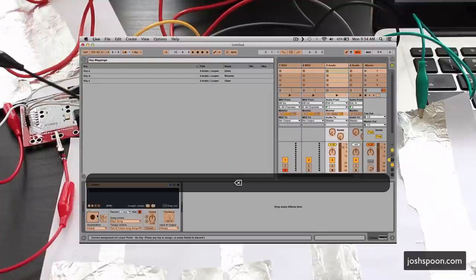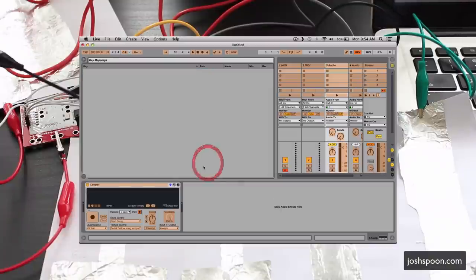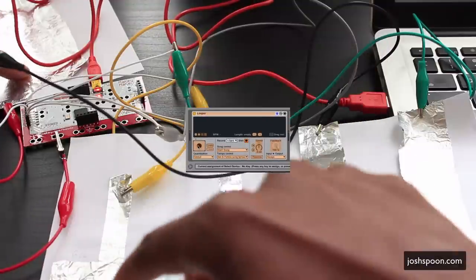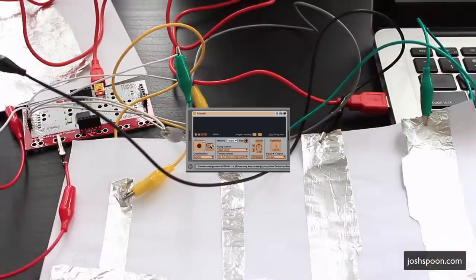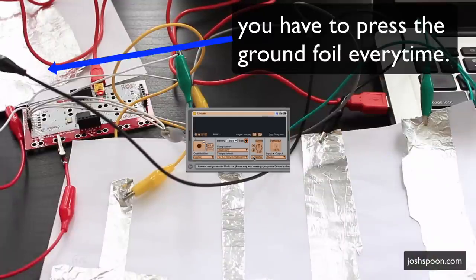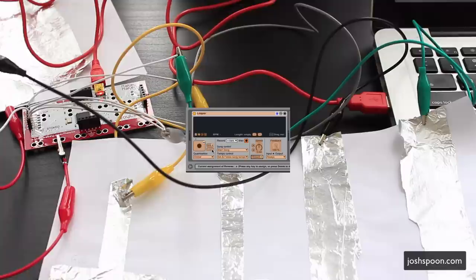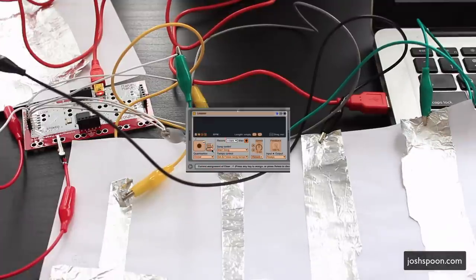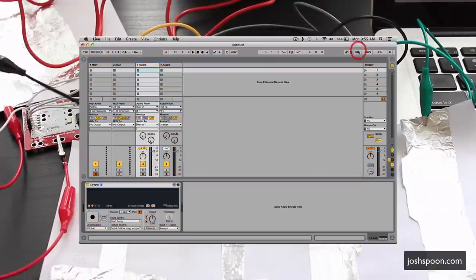I already have some of these set up from previous. So I'll delete that. And you just click on the one you want. I'm going to click the ground. The first one for record. And I'm going to click the second one for undo. The third one will be reverse. And the fourth one will be clear. And I'll go out of key mapping.